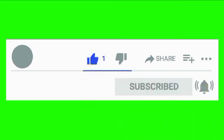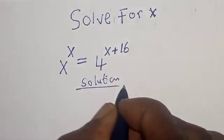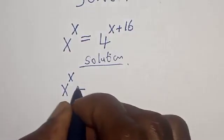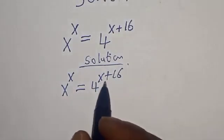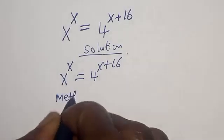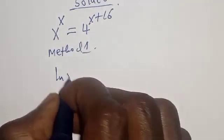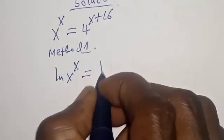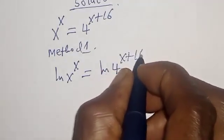Solution: we have the given equation s raised to power s is equal to 4 raised to power s plus 16. We are going to solve it using two methods. Let's call this Method One. Take the natural log of both sides: natural log of s raised to power s is equal to natural log of 4 raised to power s plus 16.